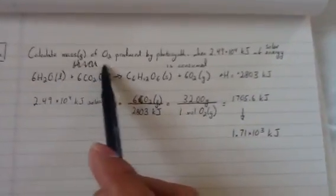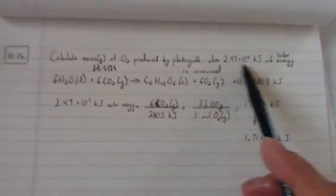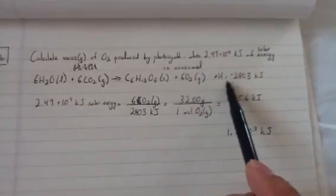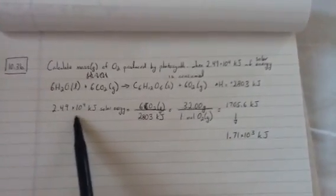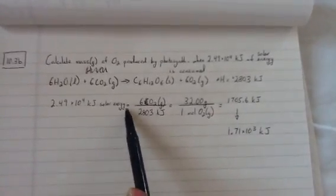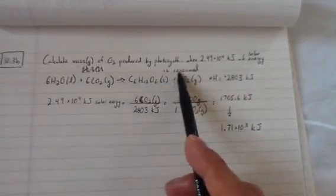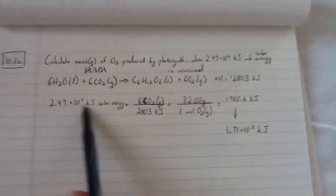It's asking for the mass of O2 produced by photosynthesis. Well, I know how much energy I have. So, I know my change in enthalpy here. We're going to start off with 2.9 times 10 to the 4th kilojoules of solar energy. Now, I said before we could set a ratio.